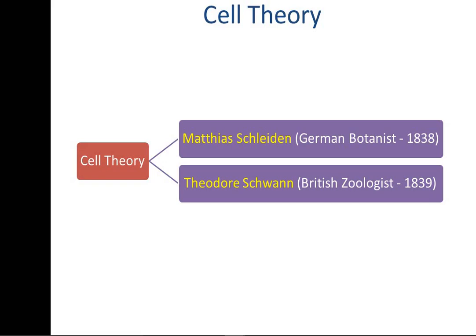It is important to remember their designation also — their specialization. For Schleiden, he had specialization in botany, and Schwann was definitely a zoologist. So how can we remember this? There is a very simple trick.